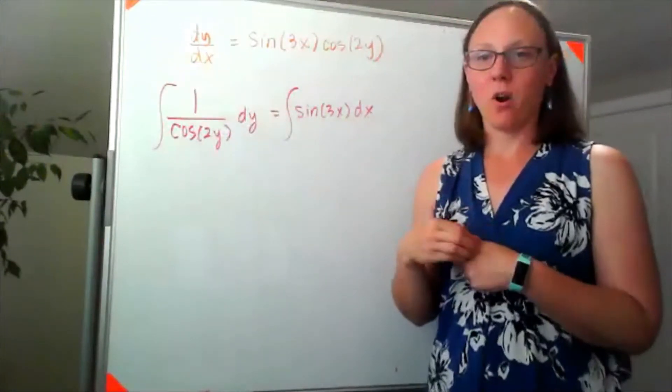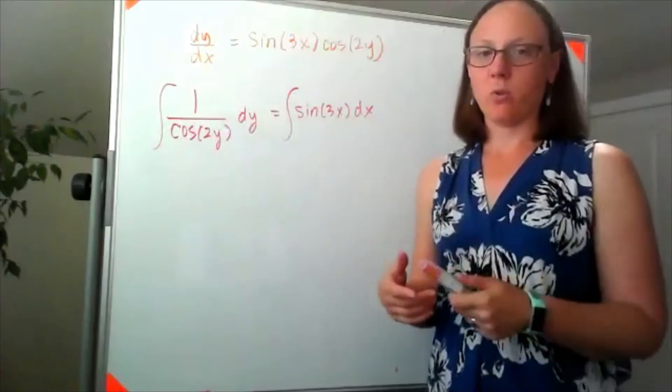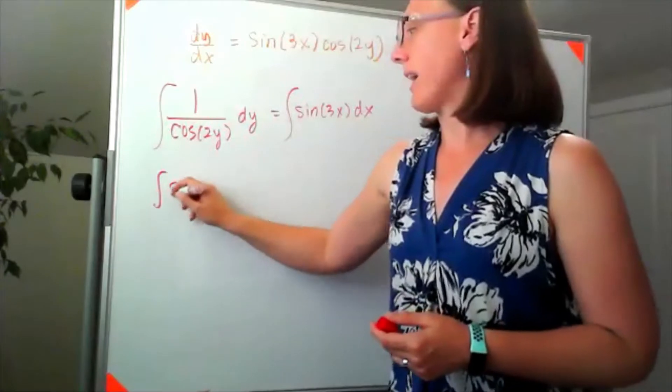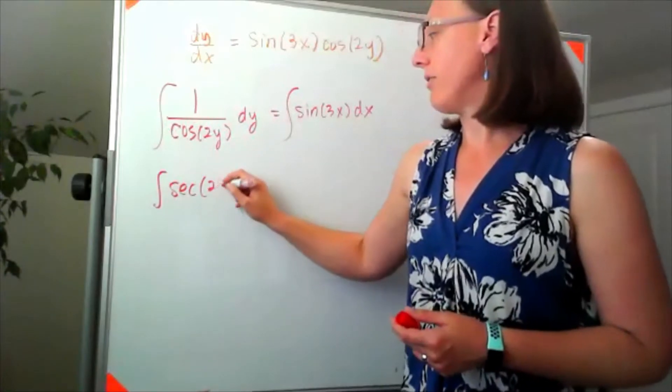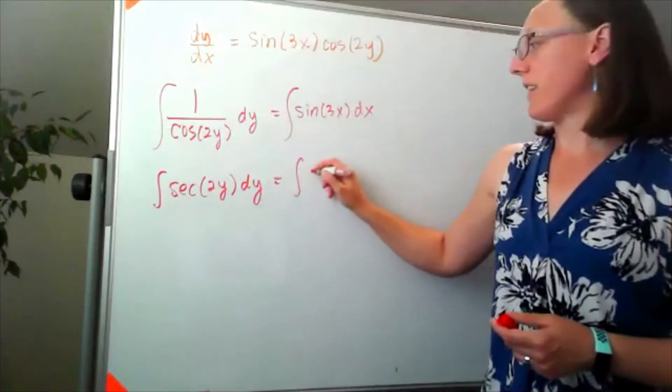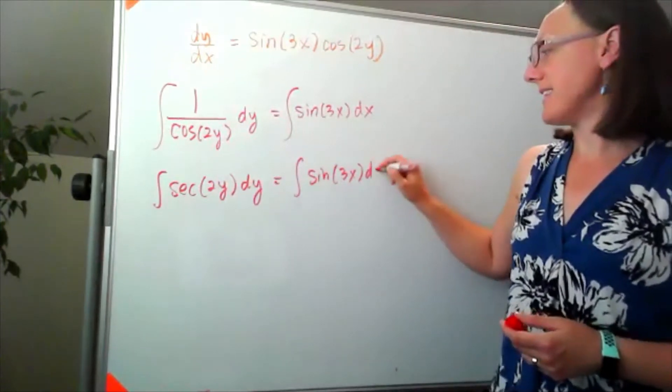We have to remember our trig integral rules. 1 over cosine is the same thing as secant, so I'm looking at secant of 2y dy. Over here, I'd be looking at the integral of sine of 3x dx.